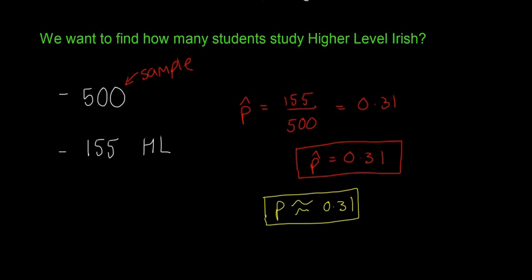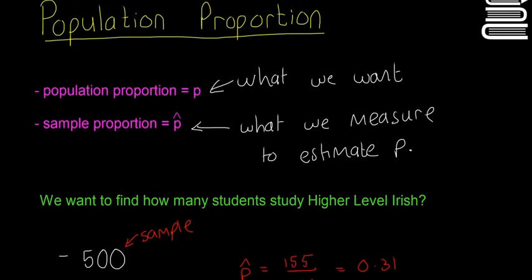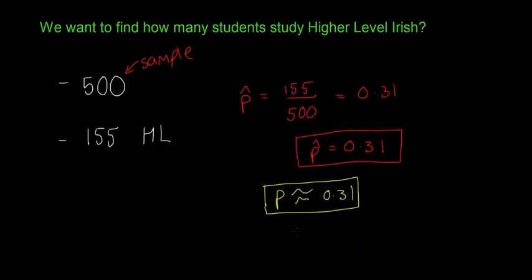So we're going to look at ways in the next videos where we're going to do confidence intervals to get a better estimate for P. So instead of just saying it's about 0.31, we can put definite boundaries. We can construct an interval it's called, that we know that P is going to be somewhere in that boundary, in those limits. And to do that we're going to use the margin of error, which we learned in the last video.